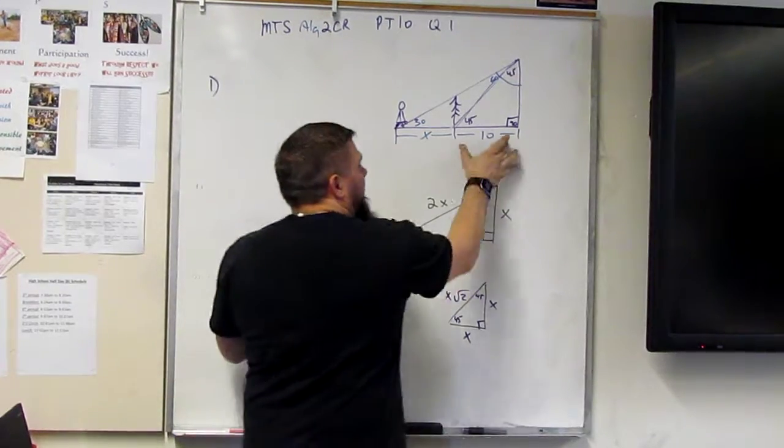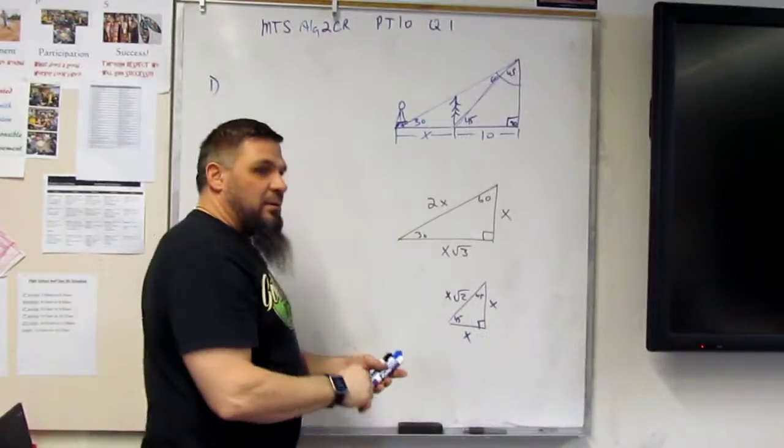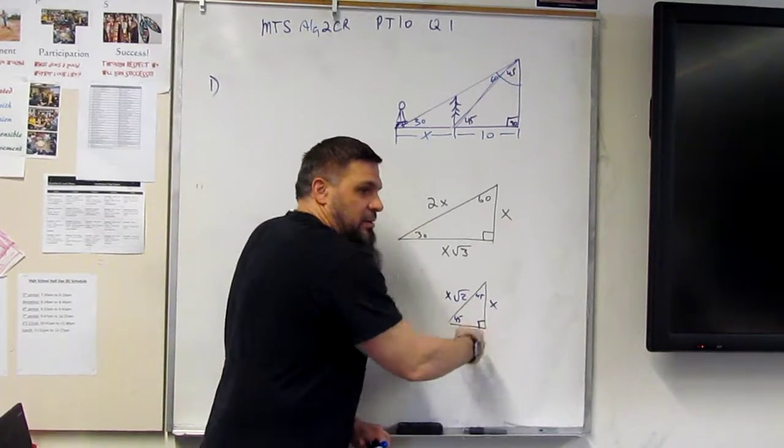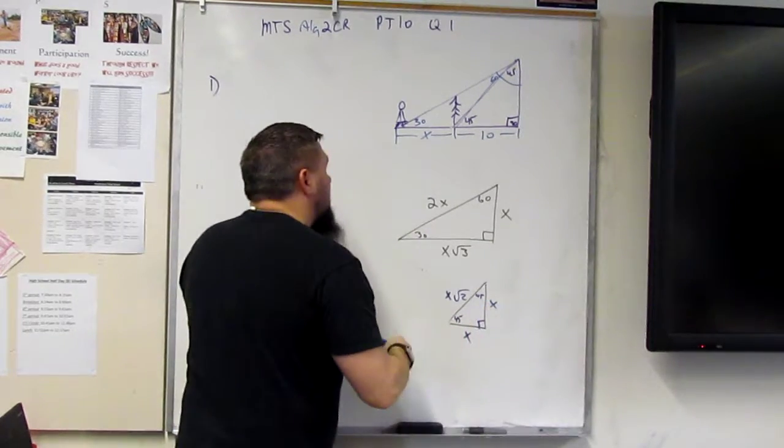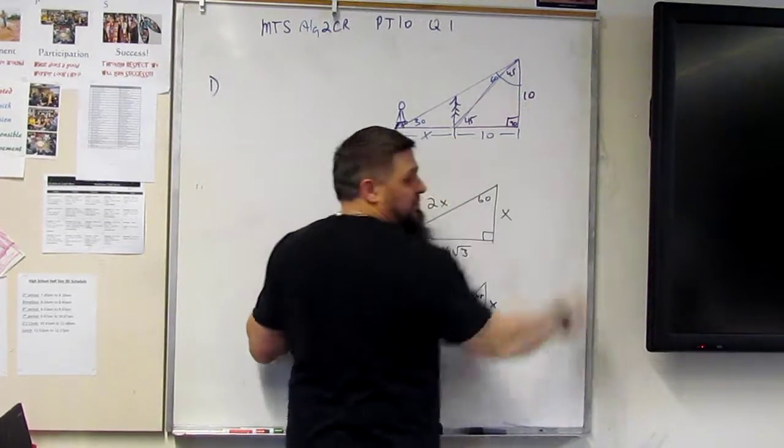Because this is a 45-45, right? So what do we know about 45-45? What do we know? These are equal. Right? So that means this has to be 10.